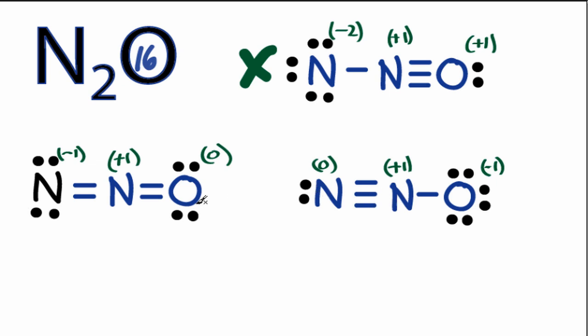We're left with these two, which look pretty much the same. We have a plus 1 and minus 1, and a plus 1 and minus 1 here. We want to choose the Lewis structure with the negative formal charge on the most electronegative element.